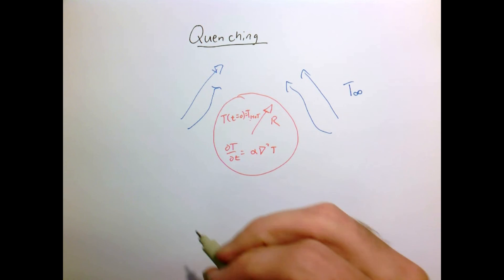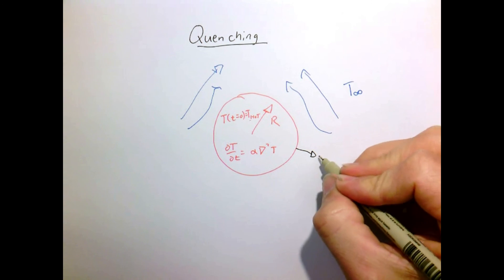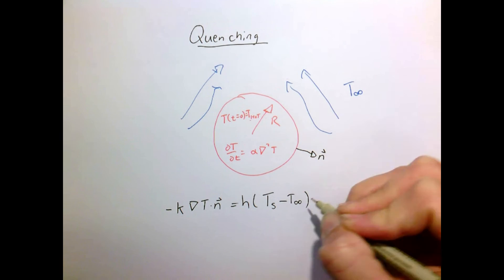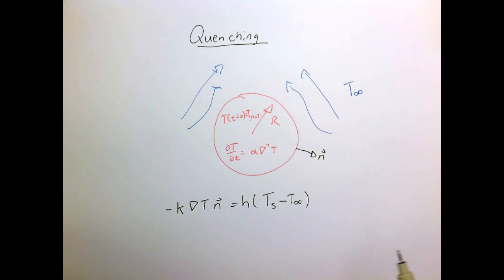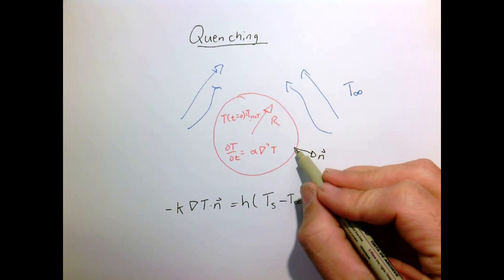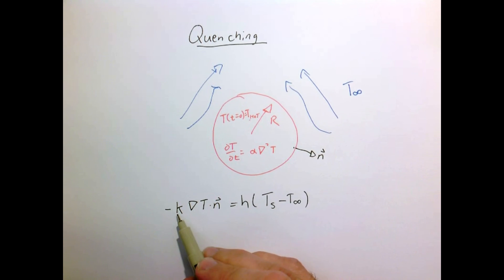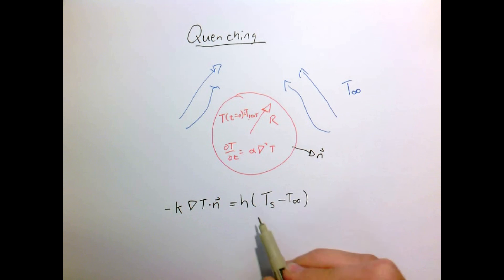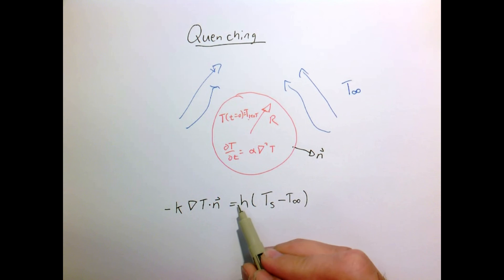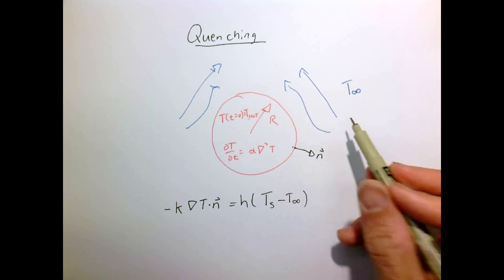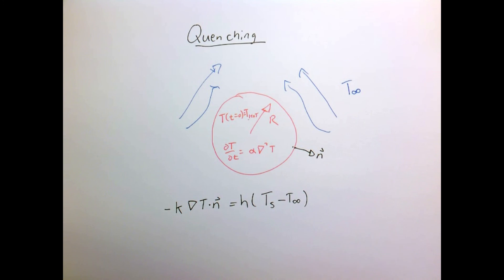We learned before that the boundary condition for convection, when I have a normal vector in, is that the conductive flux just inside the surface — minus the conductivity times the gradient of the temperature, dotted with that normal vector — has to equal the convection coefficient H times the temperature of the surface minus the temperature of the far field fluid.